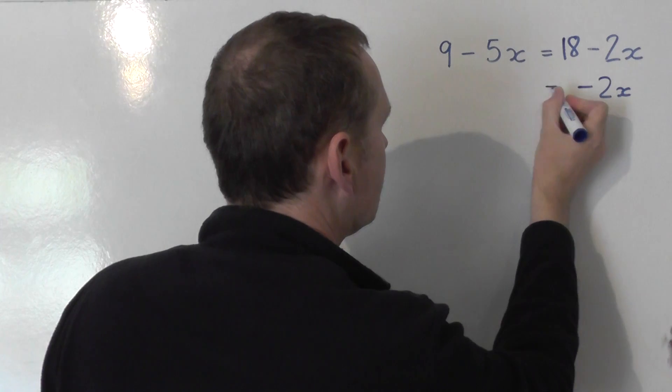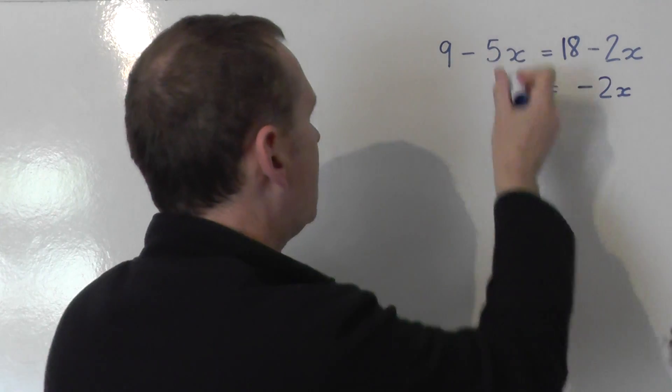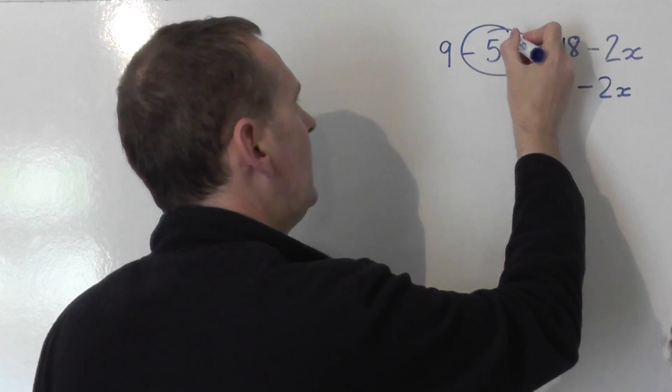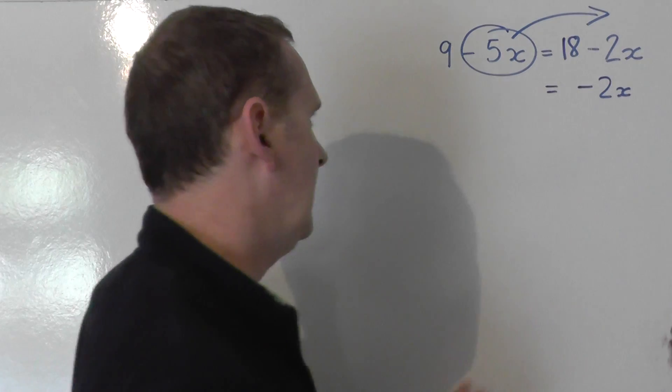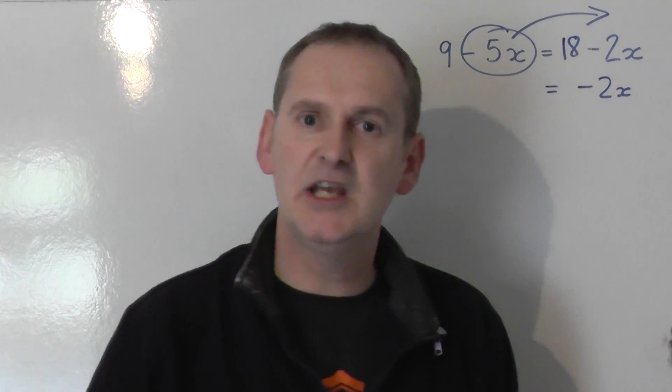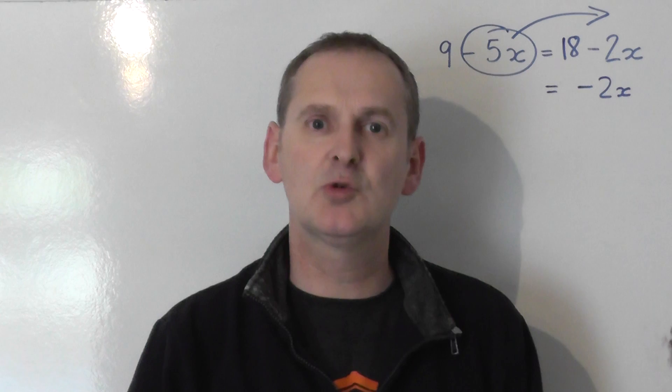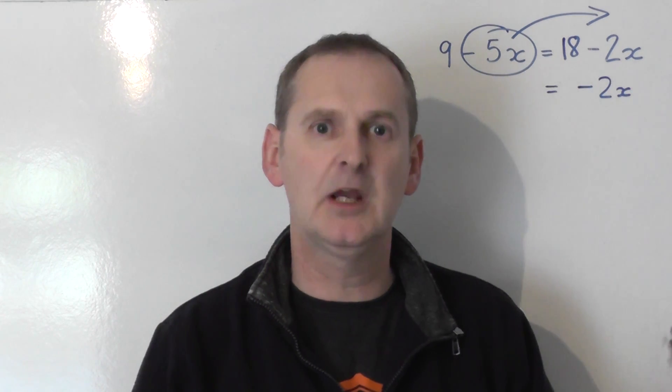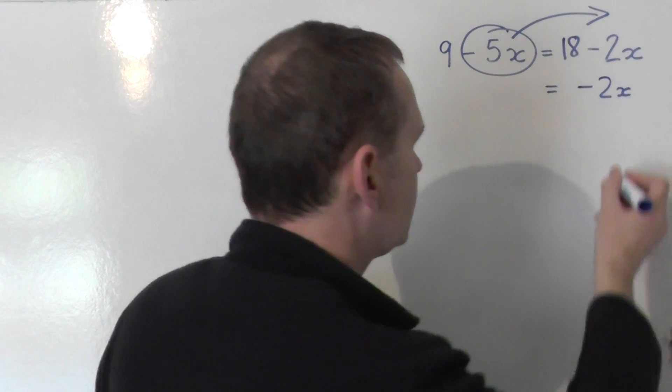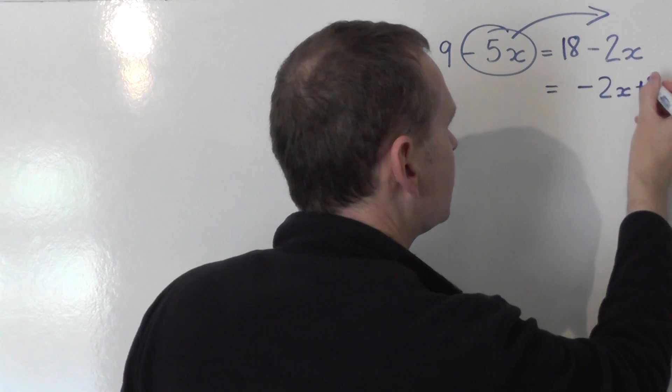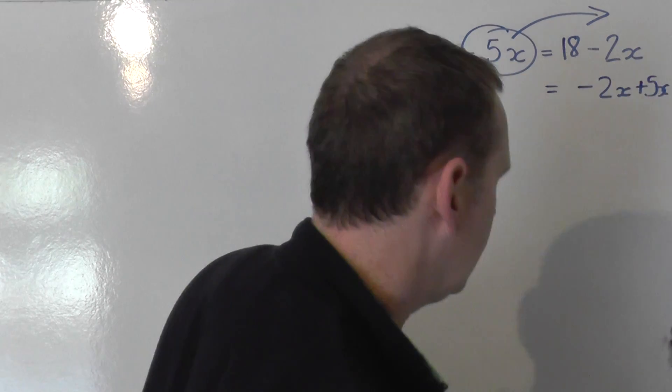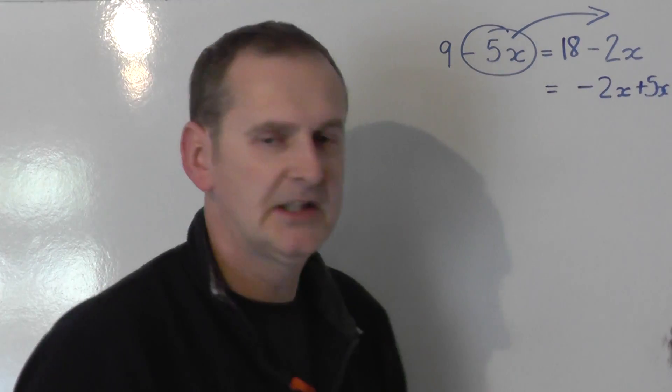Let me just replace that equal sign again. I'm going to take the minus 5x from the left to the right to join it. Minus 5x, take it over, swap sides, swap signs. So the minus 5x becomes a plus 5x on the right-hand side. So we get plus 5x. OK, so I've collected the x's on the right.